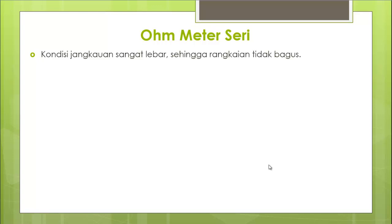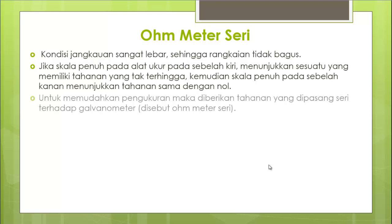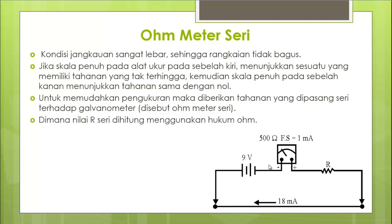Untuk mempermudah pengukuran, diberikan tahanan yang dipasang seri terhadap galvanometer, disebut ohm seri. Nilai R dihitung dengan hukum Ohm. Contoh: sebuah galvanometer dengan tahanan dalam 500 ohm, arus maksimal 1 mA, dan tegangan suplai baterai 9 volt digunakan untuk mengukur resistansi. Berapa nilai tahanan seri yang dipasang? R total = V/I = 9/0,001 = 9k ohm. R seri = R total - hambatan dalam = 9000 - 500 = 8,5 kilo-ohm.